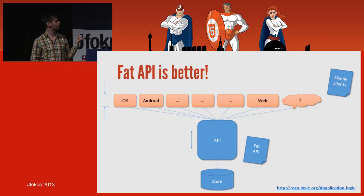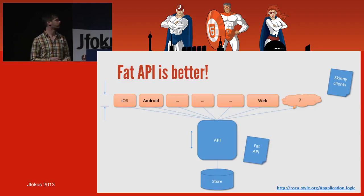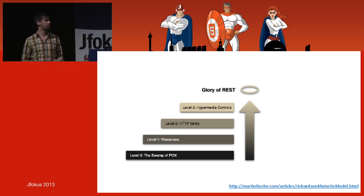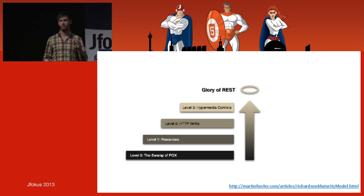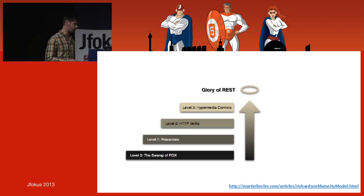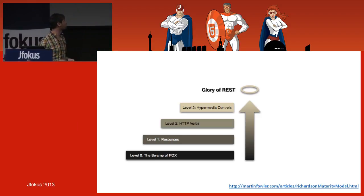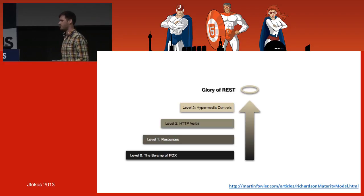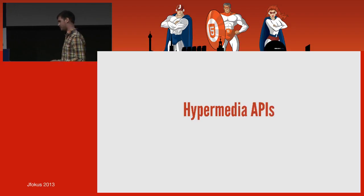How do we get from thin APIs to fat APIs? The best way is to go purist — Level 3 on Richardson's Maturity Scale — because it's only at Level 3 with hypermedia controls that you can expose application flow and processes to clients. None of the lower levels of REST provide ways to expose application flow to clients.